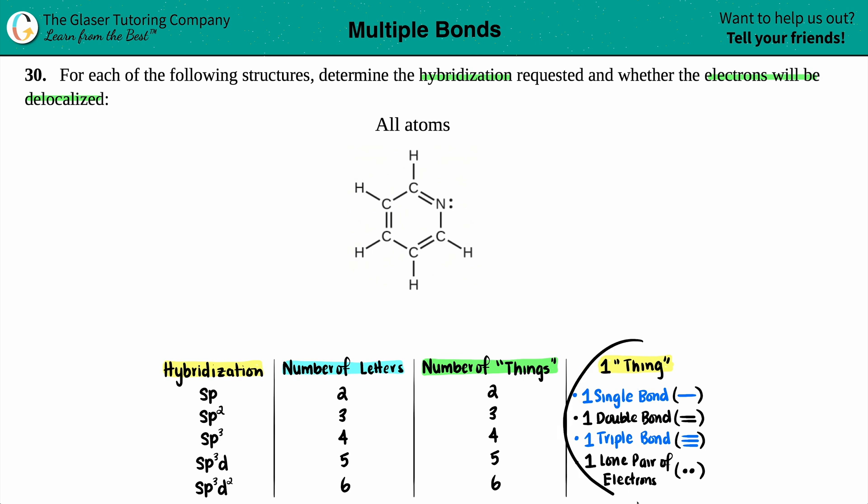So the number of letters that are in a hybridization name is whatever the number of letters are. But that translates into the number of things that are going on around the certain atom. So two letters, two things, three letters, three things, four letters, four things. You kind of get the gist. Now just know that one thing is classified as either one whole single bond, one whole double bond, so even though there's two lines we're going to group that together as one thing, one whole triple bond, so even though you see three lines we're going to group that together as one thing, and then one lone pair.